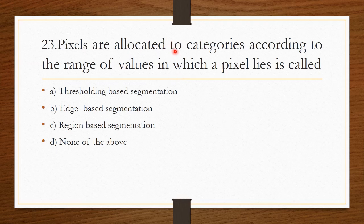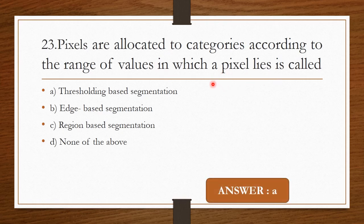Question 22: Pixels are allocated to categories according to the range of values in which a pixel lies — this is called thresholding based segmentation. Option A is the correct answer.